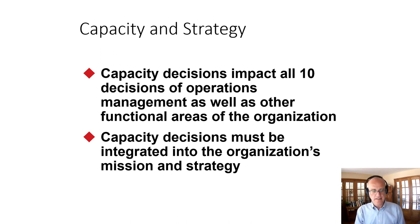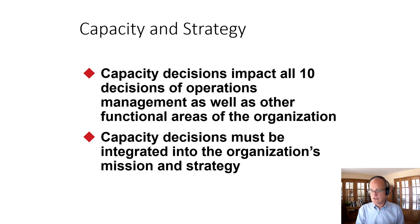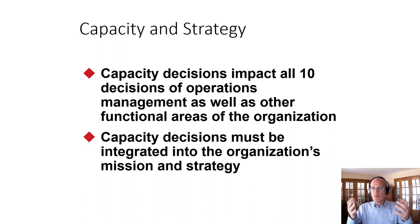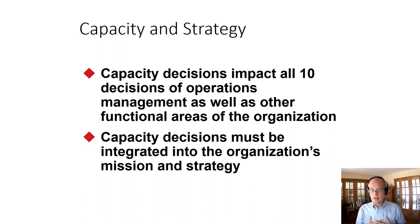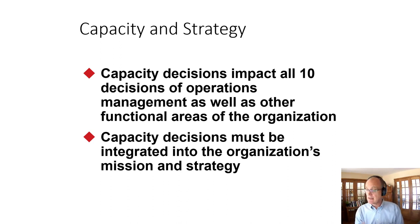How do we think about capacity and strategy? Capacity decisions impact all the key elements in operations management, as well as other functional areas of the organization. Marketing, promotions, and pricing become an important part of managing capacity. If we're under capacity, we might run promotions. If we're over capacity, we might increase prices to ration demand. Capacity decisions must be integrated into the organization's mission and strategy. If your effective capacity is well below design capacity, you might have a training issue — so HR needs to come in.